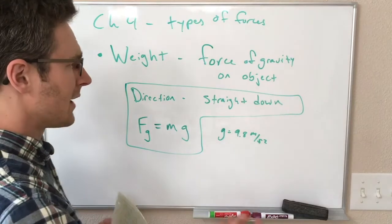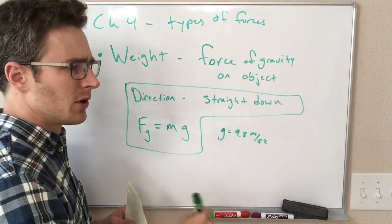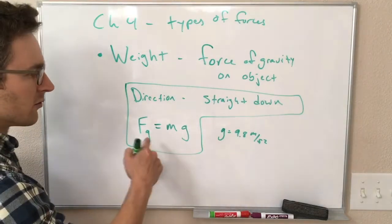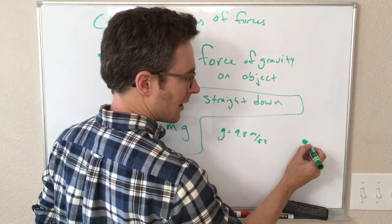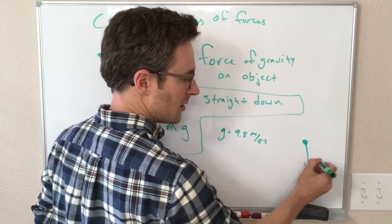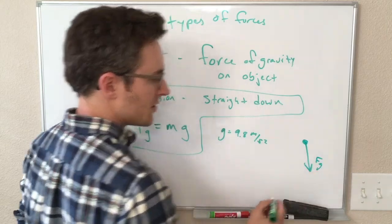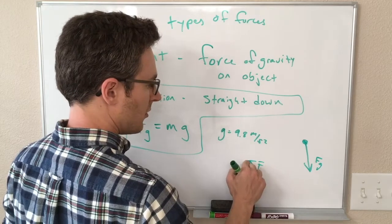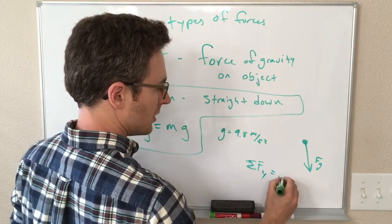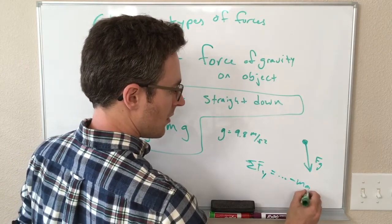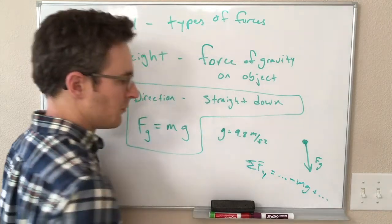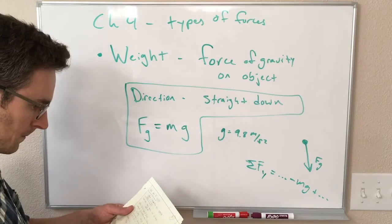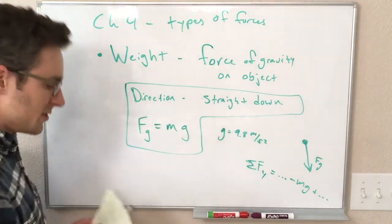So straight down and the size of it is equal to MG. This of course means if we're looking at the Y component of forces, adding up our forces in the Y direction, this is going to be a negative contribution to that. On our free body diagram, it's going to look something like this. So in our sum of Y components of forces, it's going to be minus MG.